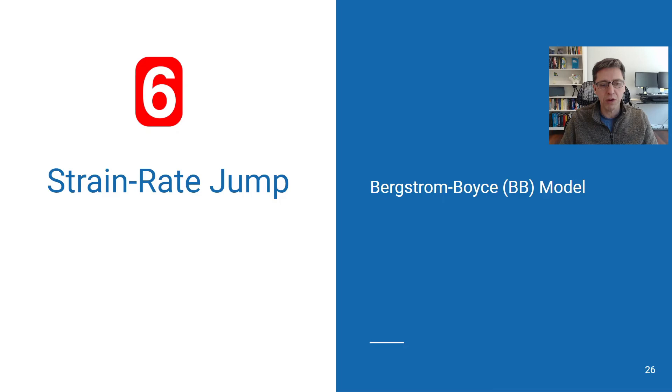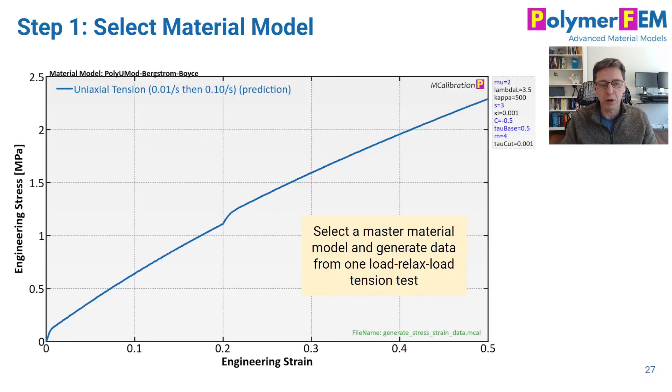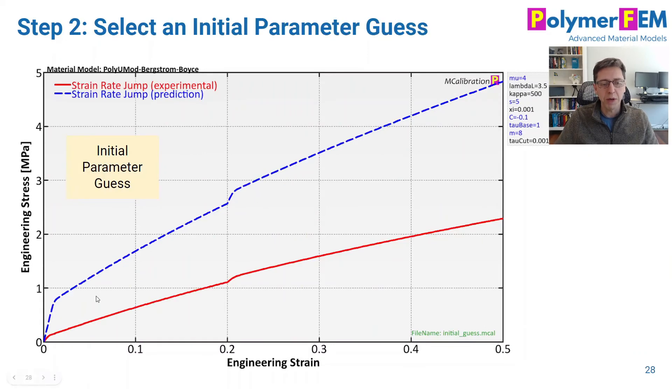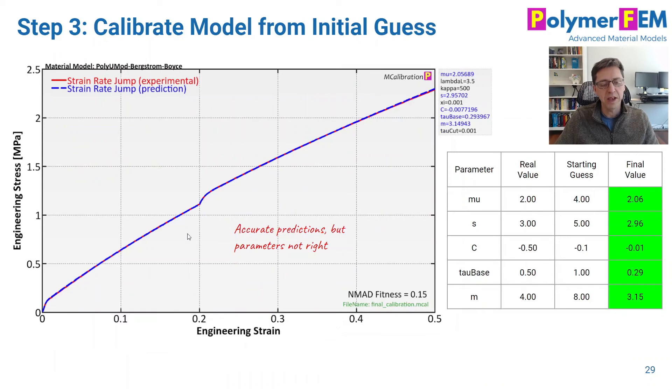How about if we do a strain rate jump? I remember a lot of people back in the day talked about strain rate jumps as a way to determine the viscoelastic behavior, viscoplastic behavior of materials. So here's an example. I pull on it to 20% strain at a slow rate, and I increase the strain rate by 10x, and this is the response after that. Is this enough to calibrate this material model? So I perturb my parameters. Here's the initial guess. I run the calibration.